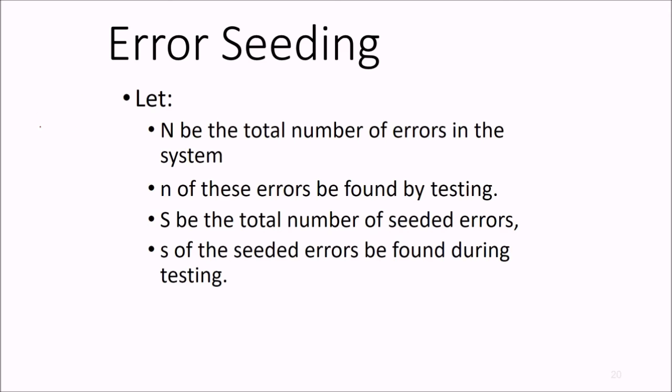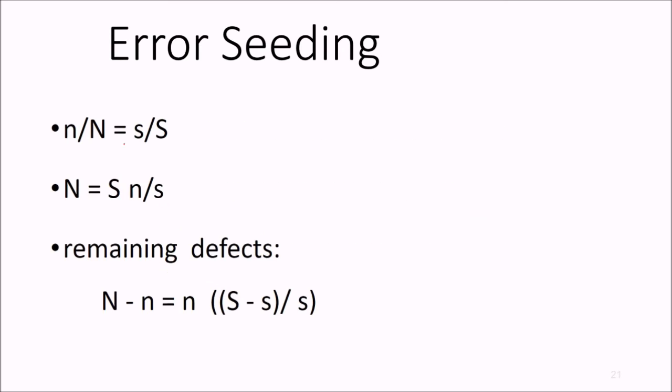This error seeding: let us say that N be the total number of errors in the system and small n are these errors found by testing. S is the total number of seeded errors and small s is the seeded errors found during testing. This is error seeding: n by capital N equals s by capital S. These are in equal ratio so capital N, the total number of errors in the system, will be like this and the remaining error would be N minus n, that will be n times (S minus s) by s.